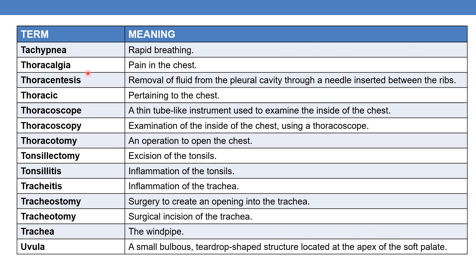Tachypnea — where tachy means fast and -pnea relates to breathing — is rapid breathing. Thoracalgia — where thoraco means chest and -algia means pain — is pain in the chest. Thoracentesis is removal of fluid from the pleural cavity through a needle inserted between the ribs.